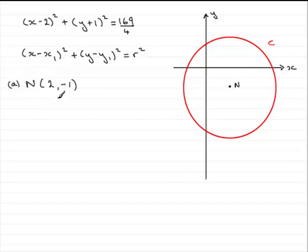Now because this is so quick to do, I'm going to do part B as well, because in part B you've got to find the radius. Well, the radius squared is 169 over 4.